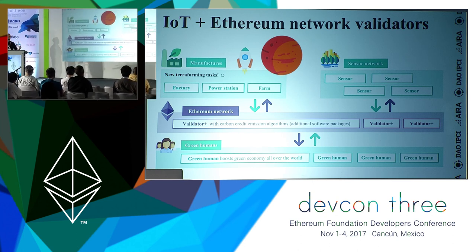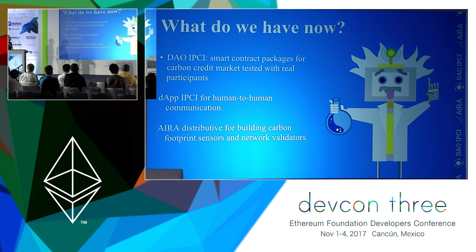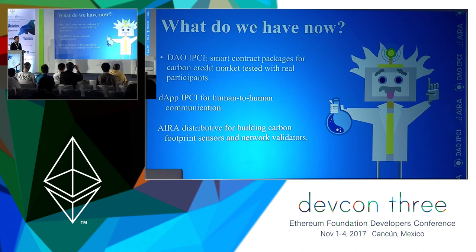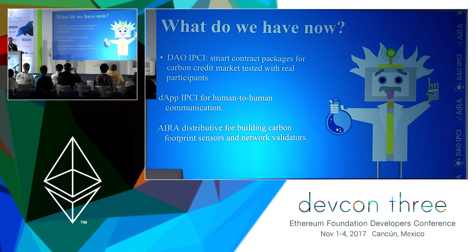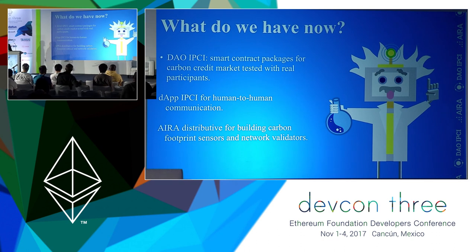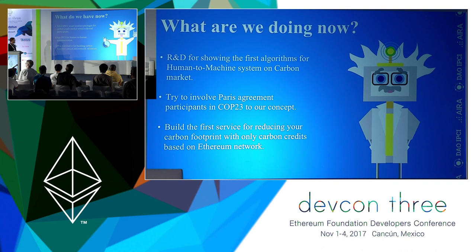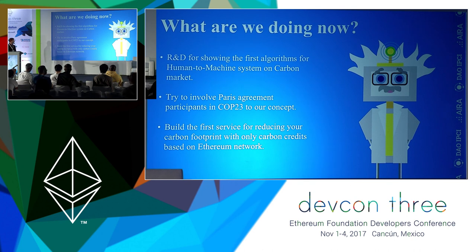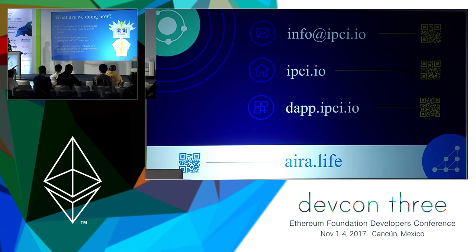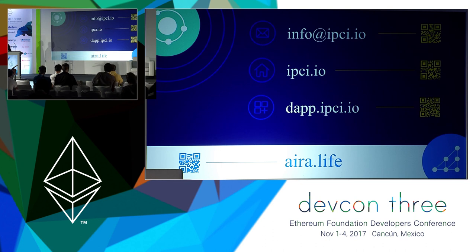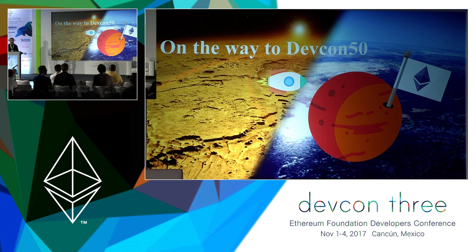Today we have a smart contract package for the carbon credit market tested with real participants. We've built a digitalized application for human-to-human communication, and the Aerolap team is now building the first carbon footprint sensor network with blockchain network validators, based on the Aerolap distributive. Next year we will show the first algorithm for carbon credit issuance based on the network. We want to build the first service for reducing your carbon footprint using only blockchain-based carbon credits. More information is available at Aerolap.live. Keep on the way to Defcon on Mars — we will try to make Mars more comfortable. Thank you.